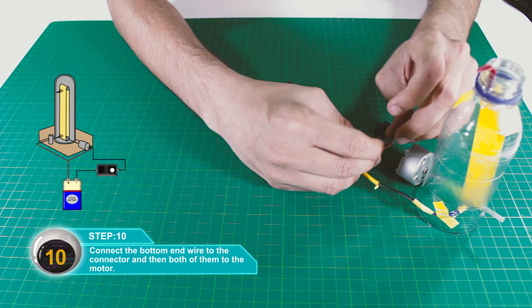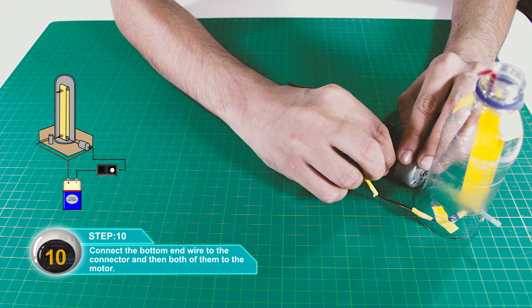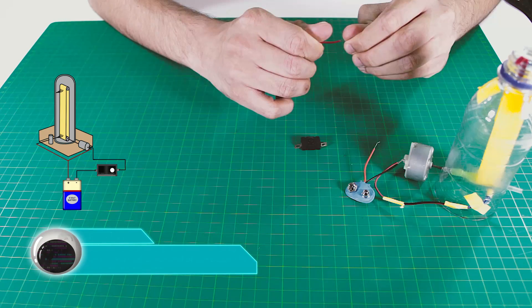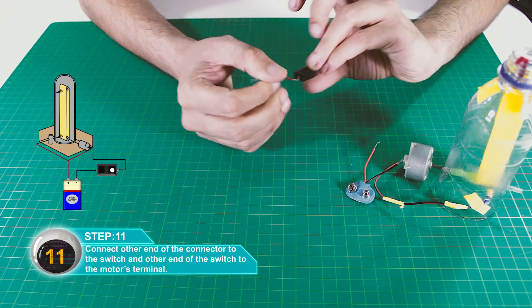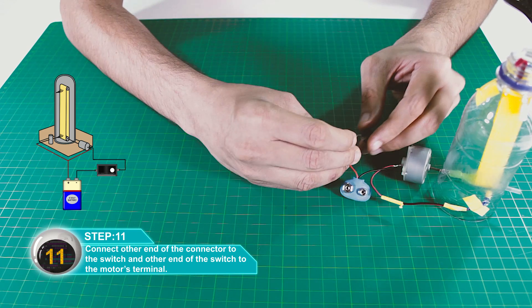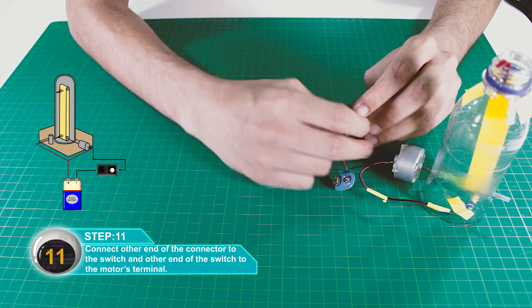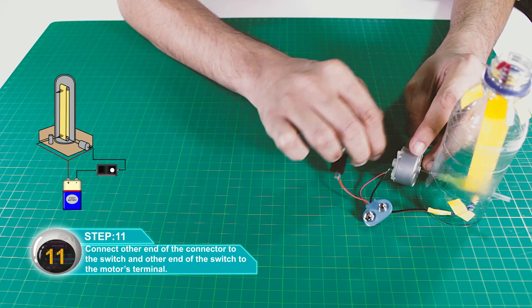Connect the bottom wires to a connector, then connect both to the motor. Connect the connector's other wire to a switch, and connect the switch's other end to the motor's other terminal.